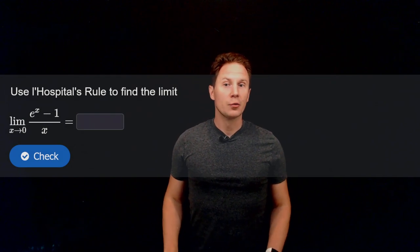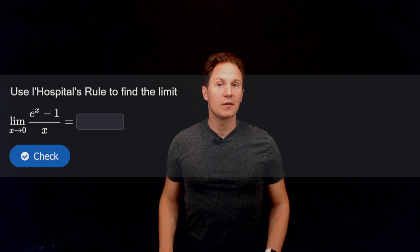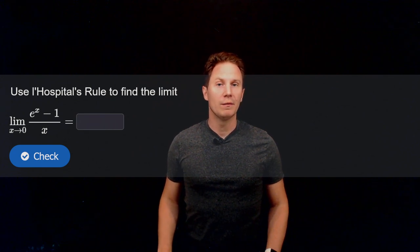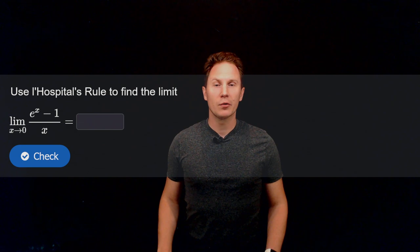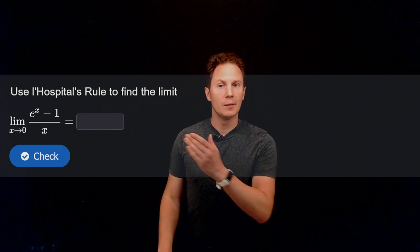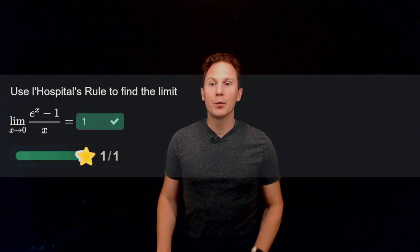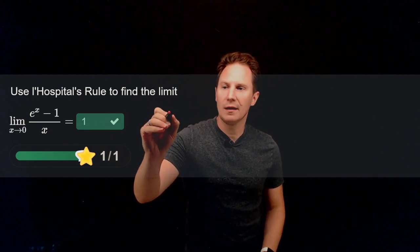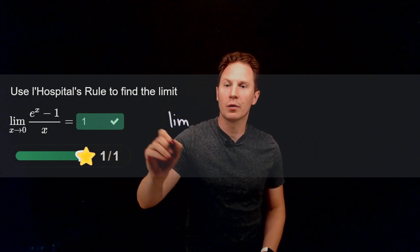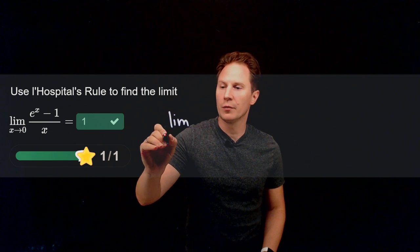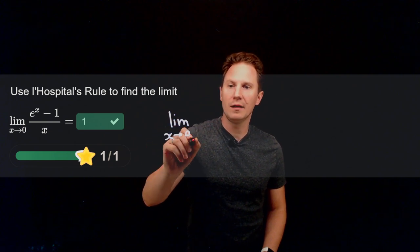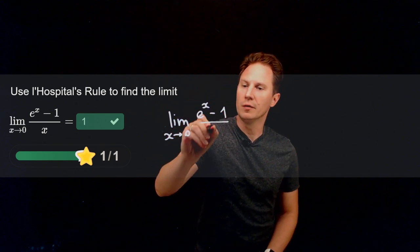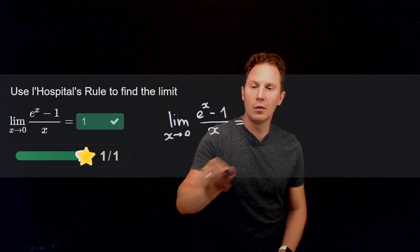Use L'Hôpital's rule to find the limit as x approaches zero of e to the x minus one, all divided by x. This limit is equal to one. This is of an indeterminate form of zero over zero, so you can find the limit of e to the x minus one, all divided by x as x approaches zero, by using L'Hôpital's rule and taking the limit of the quotient of the derivatives.